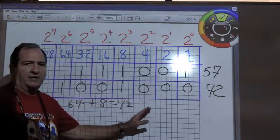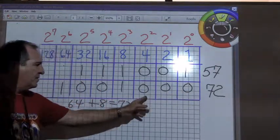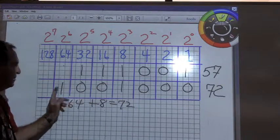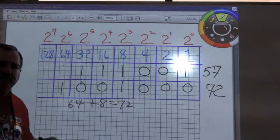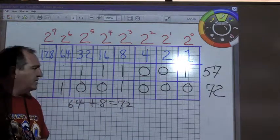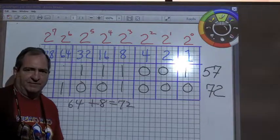this one. So, the binary number is 1001000, and that kind of is a beginning introduction to binary numbers. Thank you.